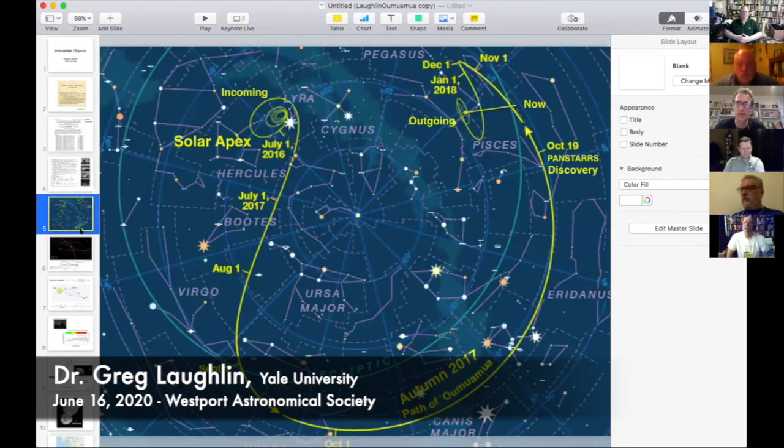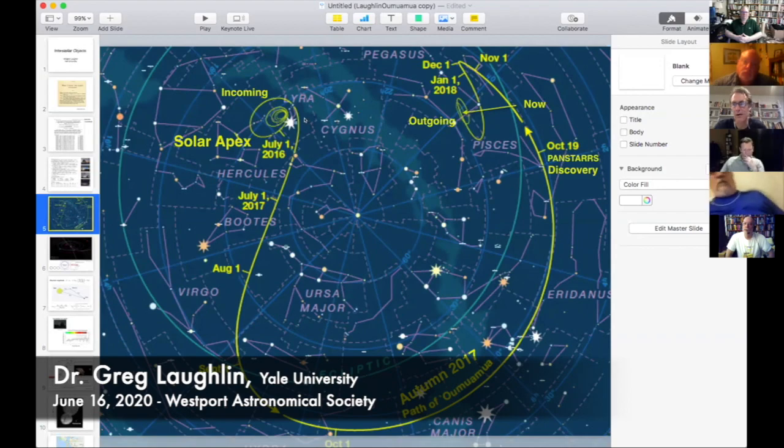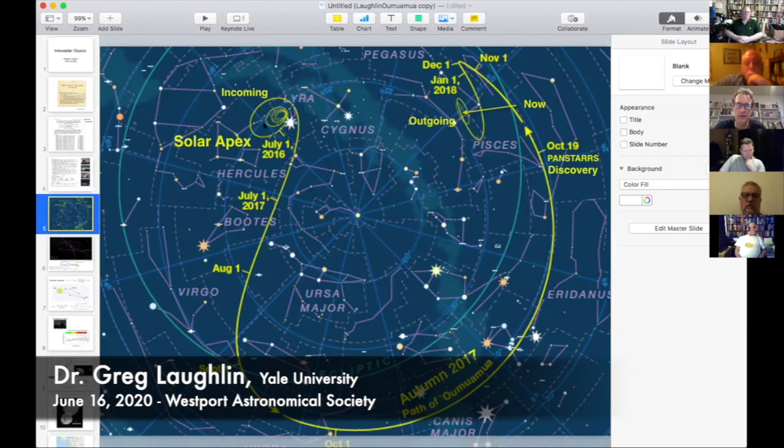This discovery was initially made at PanSTARRS, which is an Air Force-funded telescope on top of Haleakala. And then for this first minor planet circular it was confirmed or at least observed by several other observatories. This comes from a Sky and Telescope article that I wrote a couple of years ago about Oumuamua. They helped with this really nice graphic. And what this shows is just Oumuamua's trajectory through the sky. The object, year after year, came toward us from the constellation Lyra.